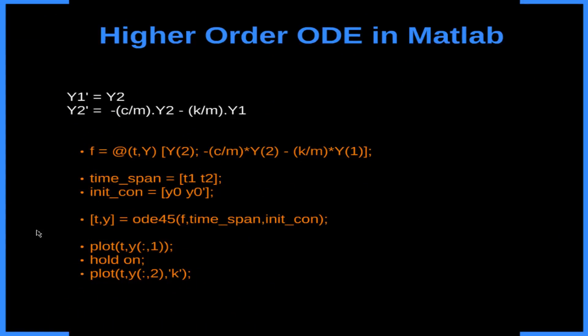To solve this problem in MATLAB, we are going to create a variable F that's going to be a function of t and Y caps. Y caps is going to be a vector, we are going to have Y1 and Y2. Y2 is our Y2 here and Y1 is of course our Y1 here.